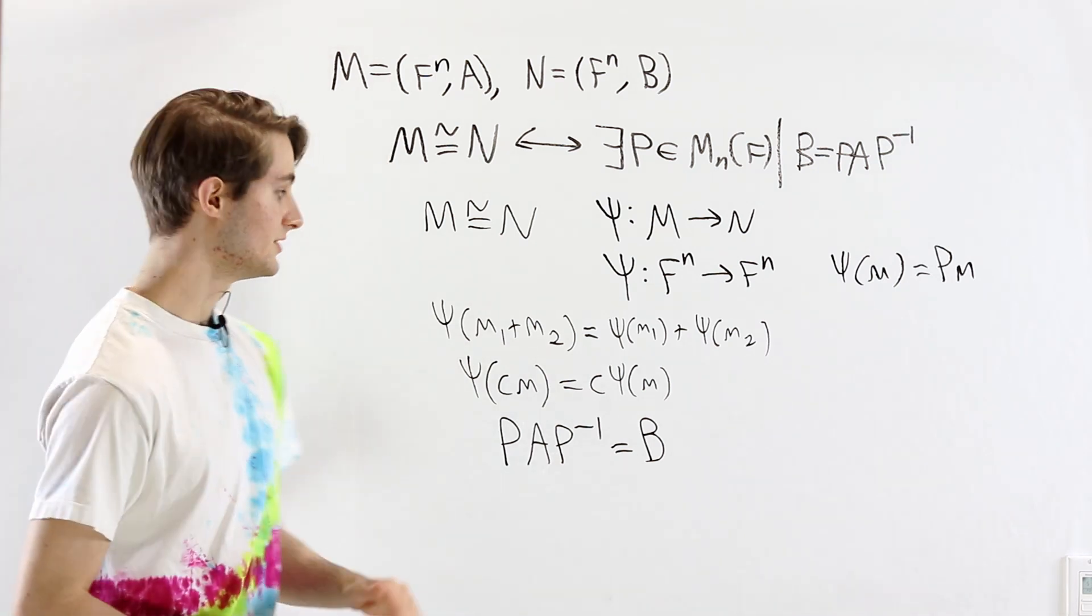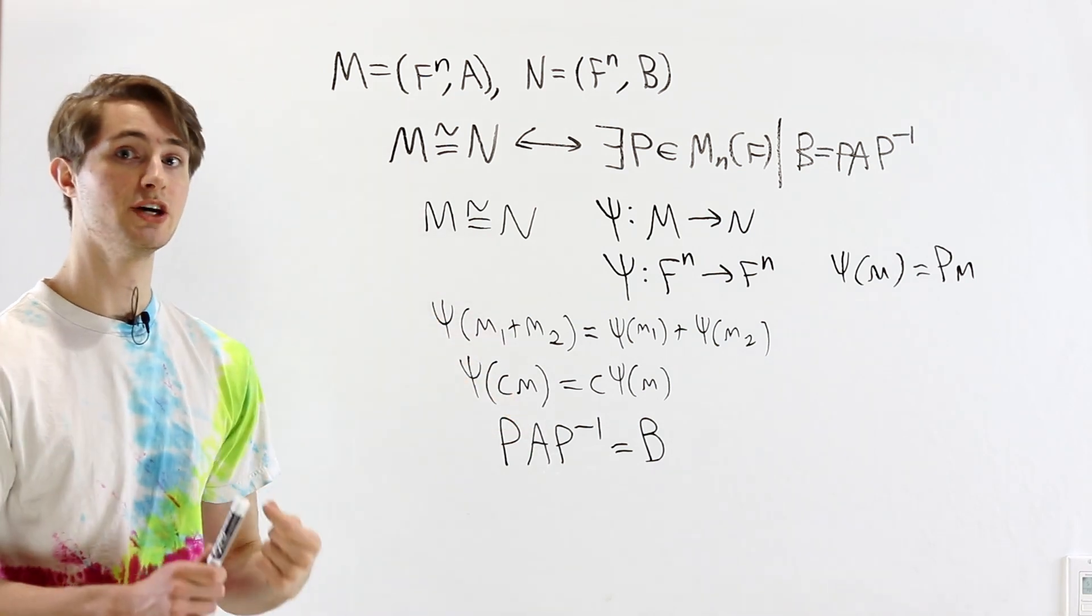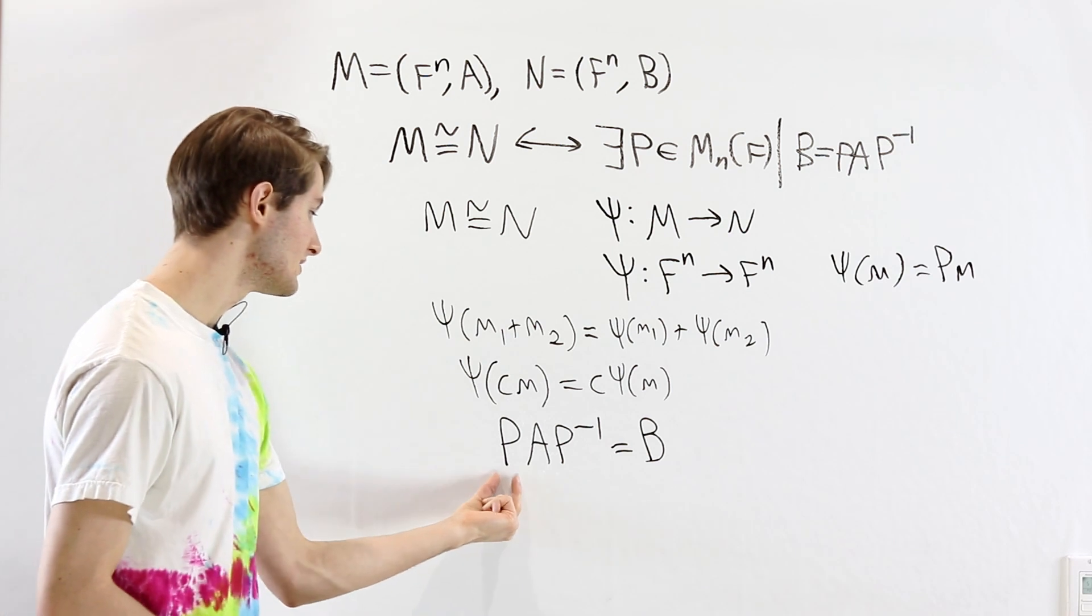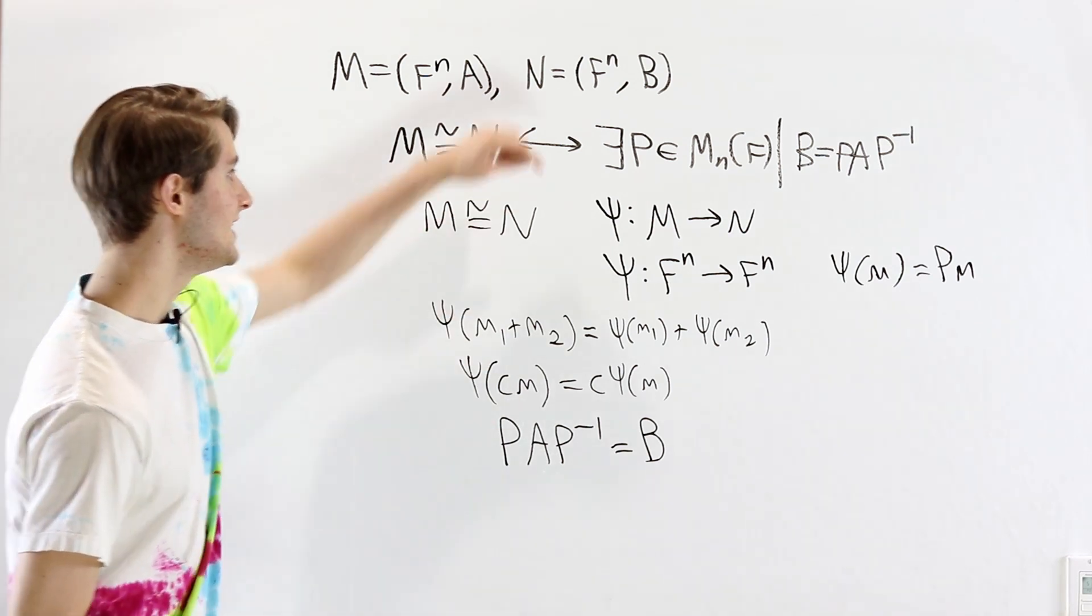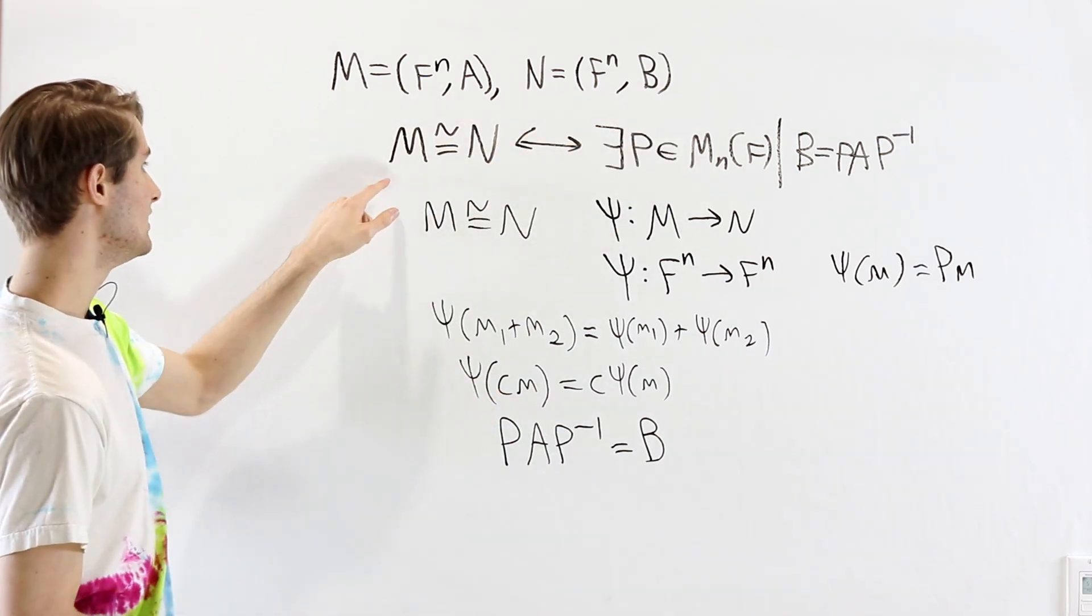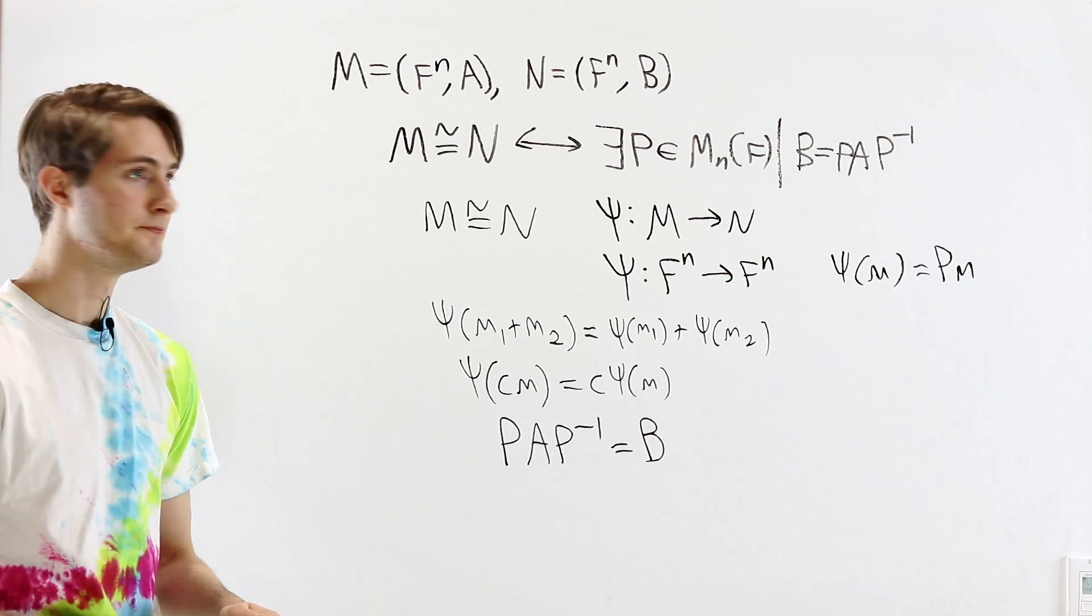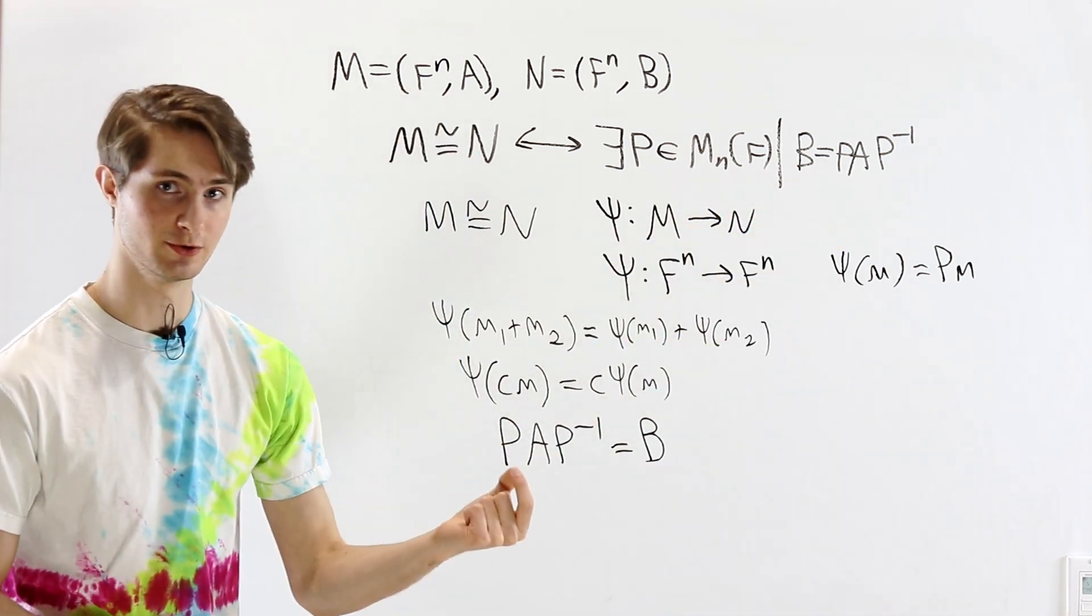Now it's important to recognize that this is not just an existence statement. This is a very specific matrix P. This matrix P is the isomorphism from M to N. So what this is saying is if M is isomorphic to N, then B is similar to A by the isomorphism, which is a really interesting idea.